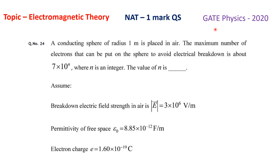This question was asked in the GATE physics paper 2020. It is a numerical answer type question having one mark. The topic is electromagnetic theory. The question is: a conducting sphere of radius 1 meter is placed in air — the maximum number of electrons that can be put on the sphere to avoid electrical breakdown is about 7 times 10 to the power n, where n is an integer.